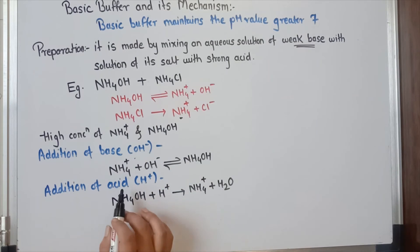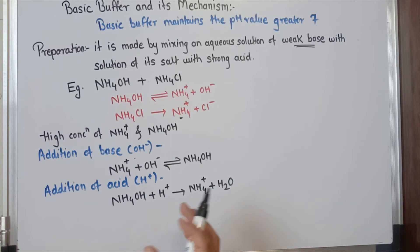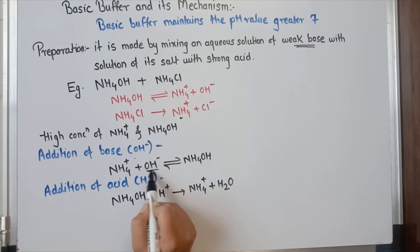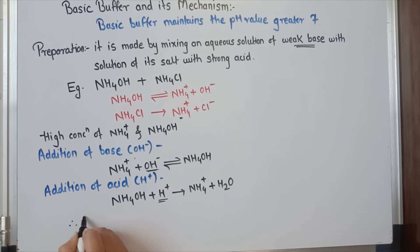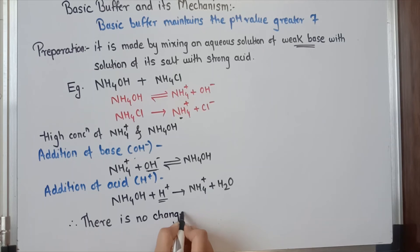On the addition of base or acid, all the OH- and H+ ions get immediately consumed in the solution. Therefore, in the solution there is no presence of unreacted OH- or unreacted H+, and therefore there is no change in the pH.